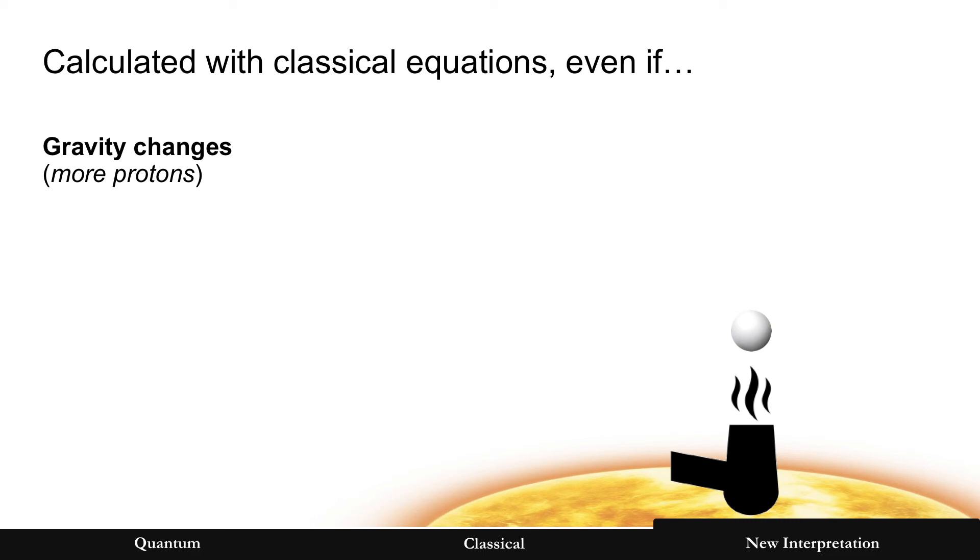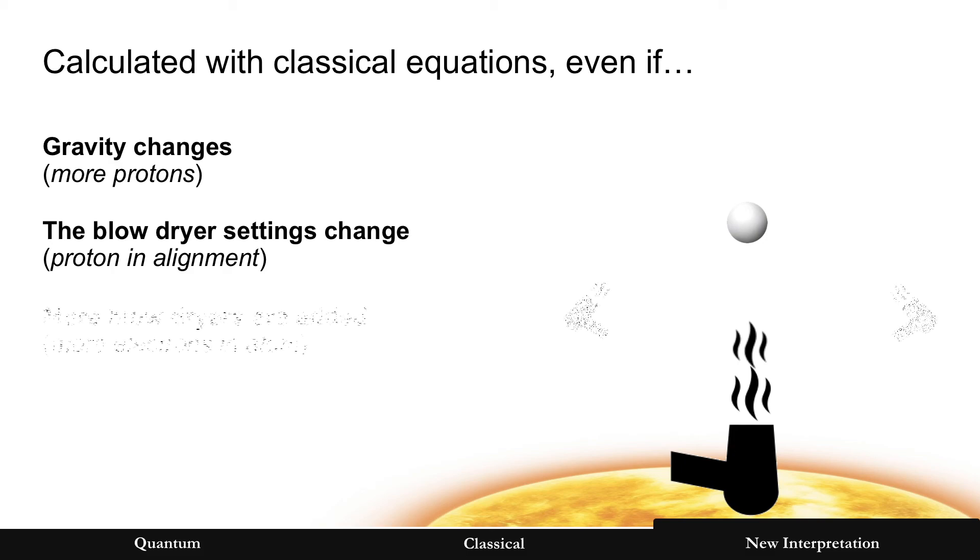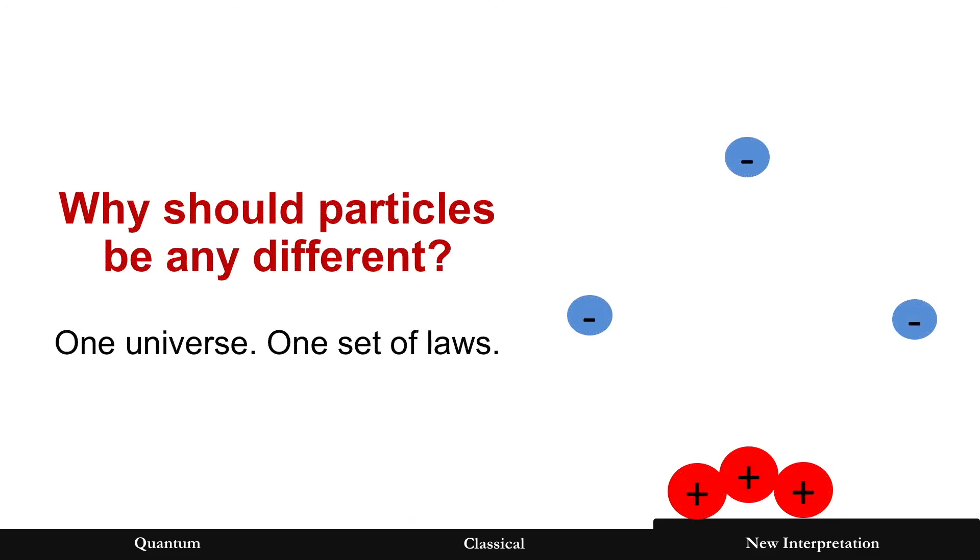What are those conditions? Well, the pull force. In this example it was gravity. And gravity could change. Let's say you do the same experiment on a different planet like the sun. It would pull it in closer. Well, the blow dryer settings could change. Let's say from low to high, where it says spin, the frequency now of the air that's pushing it away. Well, that forces it further away. Let's say you have more blow dryers that are added at different angles, just like more electrons in the atom. So why should particles be treated any differently?